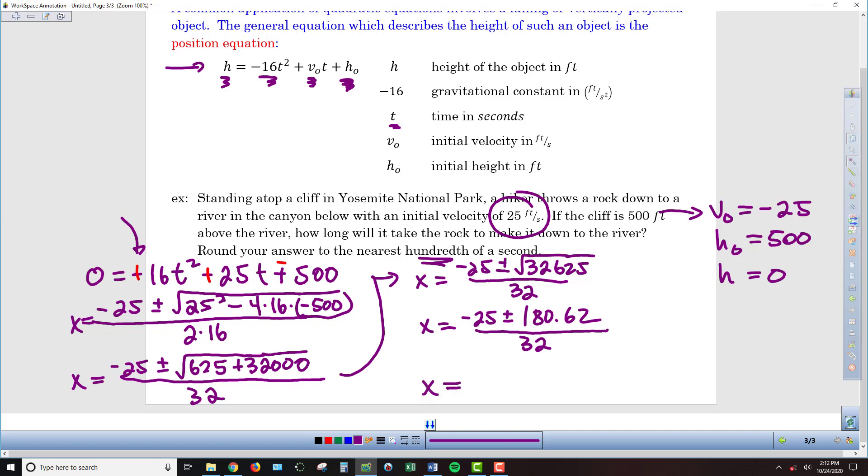So, we're getting close to the finish line. We've got x equals, so negative 25, plus 180. I'm going to get positive 155.62, all over 32. And then, if I do negative 25 minus 180, I'm clearly going to get a negative number.